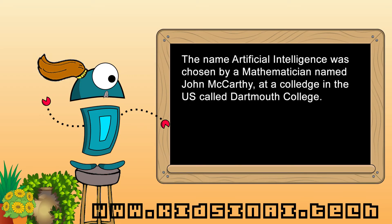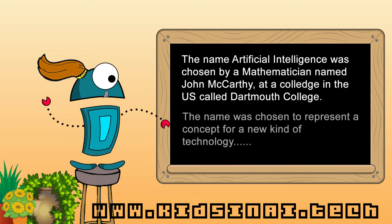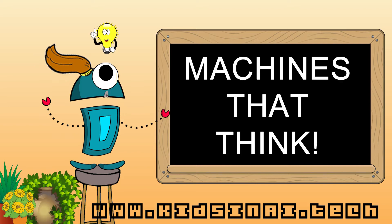The name Artificial Intelligence was chosen by a mathematician named John McCarthy at a college in the U.S. called Dartmouth College. The name was chosen to represent a concept for a new kind of technology: machines that think.